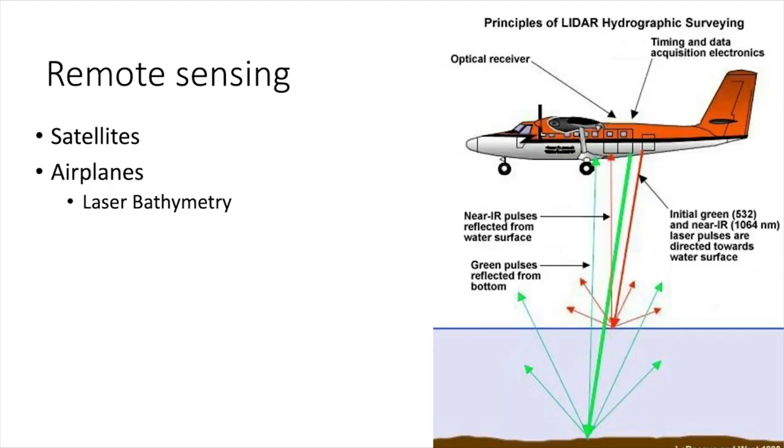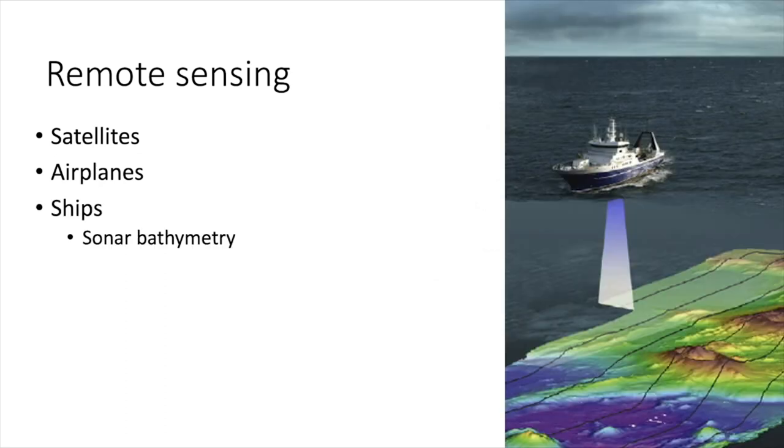You can also use airplanes for remote sensing, particularly for laser bathymetry. So this isn't that dissimilar from developing terrestrial topology maps. You have a plane with a laser that's pointed at the ocean and you get, and then it measures the reflectance of that laser back up to the plane. And of course, this is going to be much more useful in shallower waters than it is in deeper waters. For deeper waters, it's actually more reliable to use ship-based sonar bathymetry. So you take a ship and you run transects measuring the distance from the ship to the ocean bottom to map it.